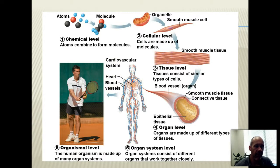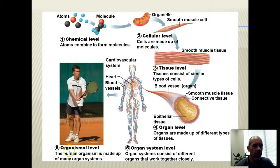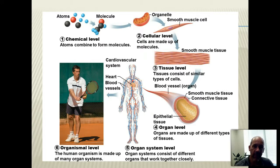Finally, when you put all of your organ systems together — respiratory, digestive, cardiovascular, nervous, endocrine, etc. — you wind up with a whole human organism. As a human individual, you could not survive without each of your organ systems, and your individual organ systems would not operate by themselves either; they're dependent upon the other organ systems in the body.